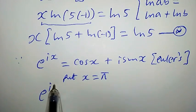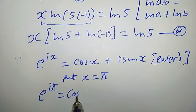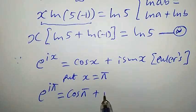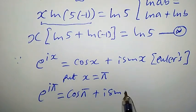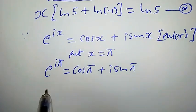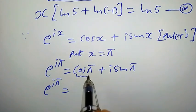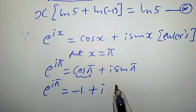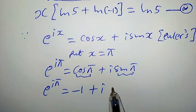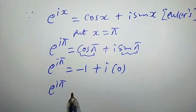Suppose we put x = π into this equation. We are going to have e^(iπ) = cos(π) + i·sin(π). Continuing: e^(iπ) = cos(π), which is -1, plus i·sin(π), which is simply 0.